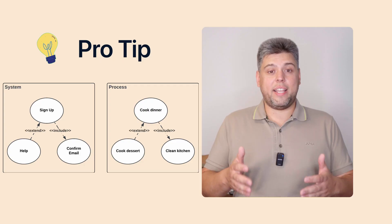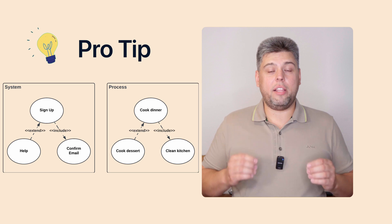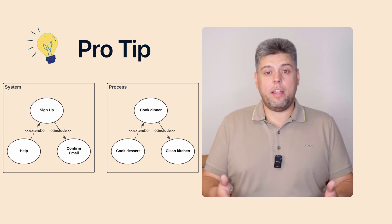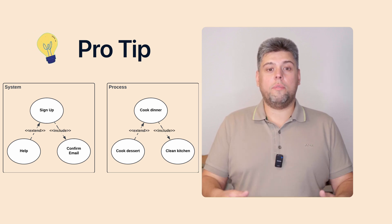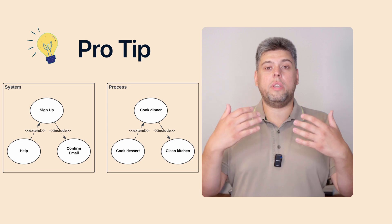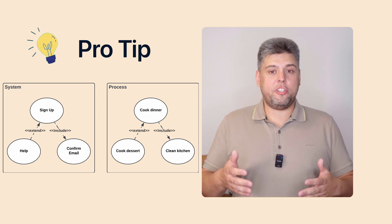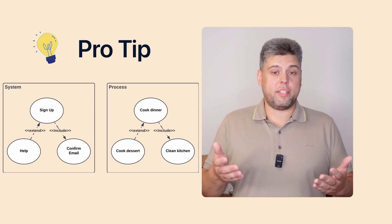To help remember arrow direction, I recommend memorizing one connection type — for example, extension — and that it goes into the main use case. This leaves you with the binary choice of include going from the whole to its part, the same as composition in a UML class diagram. A better way is to understand the word: it's extend, not extended. With that, you can say that order Coke extends order pizza, building the arrow in the right direction.